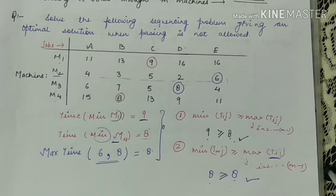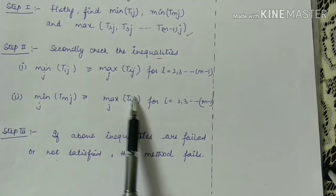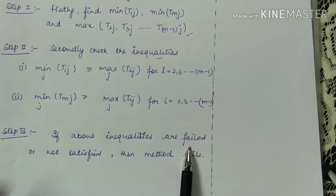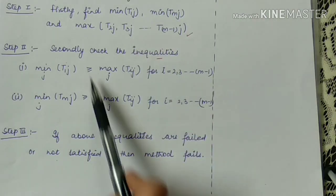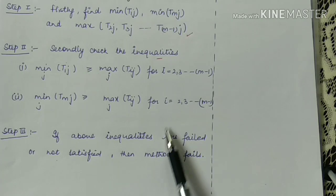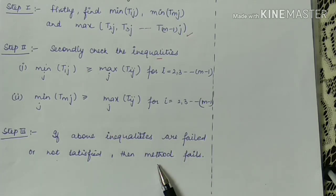Step 1 and Step 2 are now clear. Moving to Step 3: if the above inequalities are not satisfied — that is, if the method fails — then the method we are applying cannot be used. That means Johnson's method, which we applied in the first video (first part), will not be applicable when both inequalities fail.